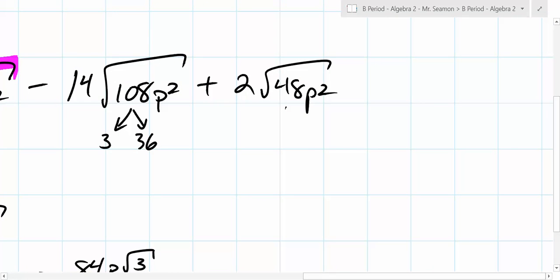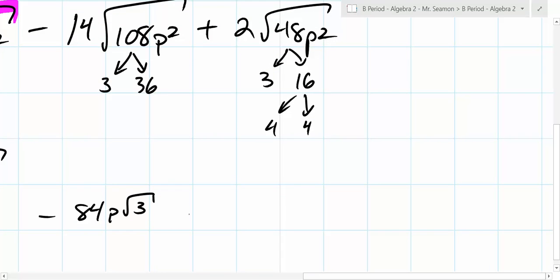What about 48? It's 3 times what? I'm looking for squares. If you get lost, here's the thing. If you get lost trying to find squares, just do the factor trees that I taught you. So if I did this, it's 4 and 4. Were we looking for a square to begin with? Sure. So we can pull out that 4 and what do we end up with? What's 4 times 2? So we ended up with 8p root 3.